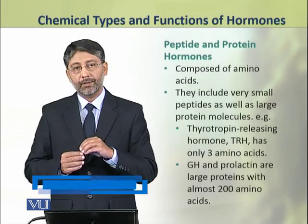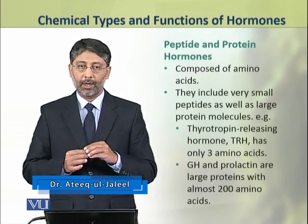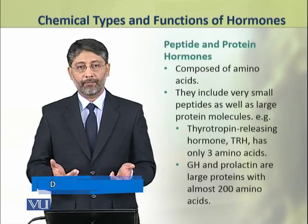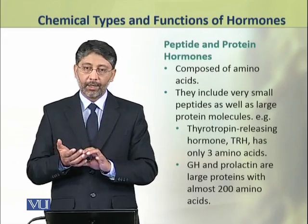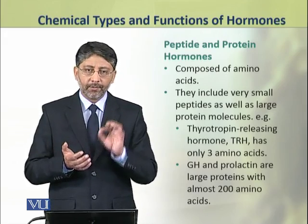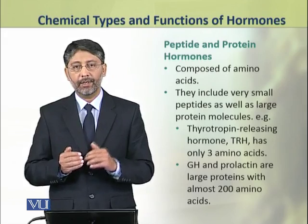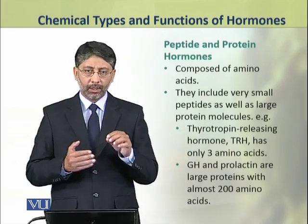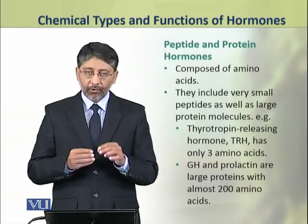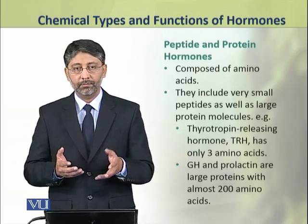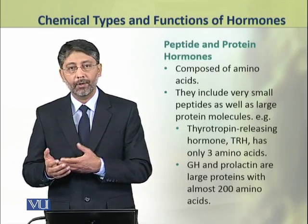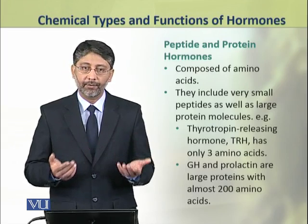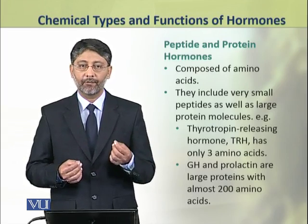First, we shall discuss the peptide and protein hormones. They are composed of amino acids and include very small peptides as well as large protein molecules. For example, the thyrotropin-releasing hormone (TRH), released from the hypothalamus, has only three amino acids in it. It is a very small peptide.